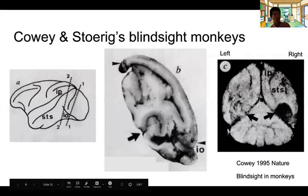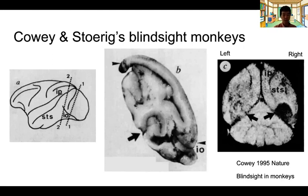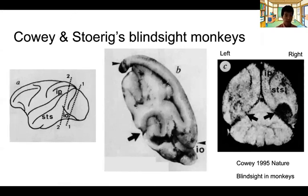Here are Cowey and Stoerig's blindsight monkeys in more detail, from their significant 1995 Nature paper. They studied four monkeys — one was a control studied further and published in 2002. In the 1995 paper, they compared three already-blind-sided monkeys versus a control. In the blind-sight operation, they cut the primary visual cortex by lobectomy — visible as a black hole in the coronal section. They literally removed the left hemisphere's visual cortex.